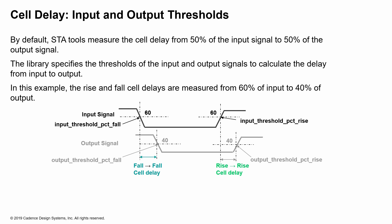So in this example, we are measuring the cell delay from 60% of the input to 40% of the output, because the input is measured with 60% and the output is measured at 40%.